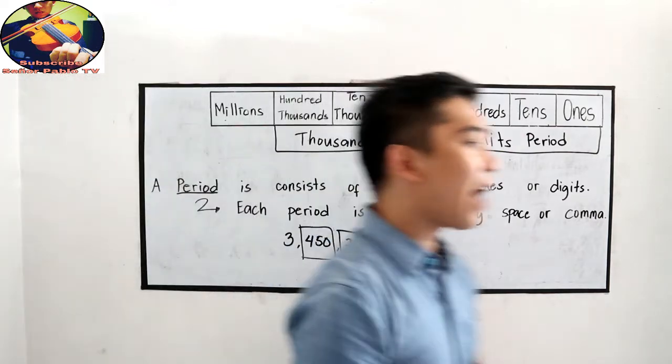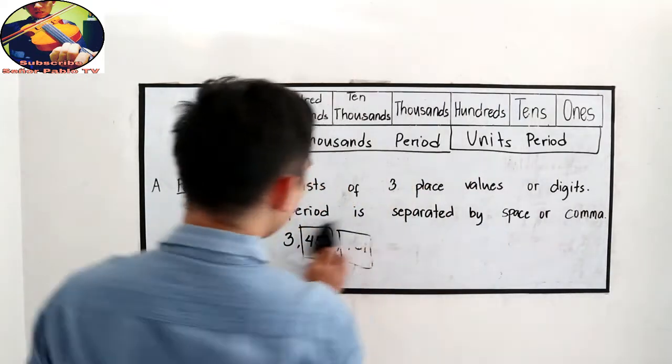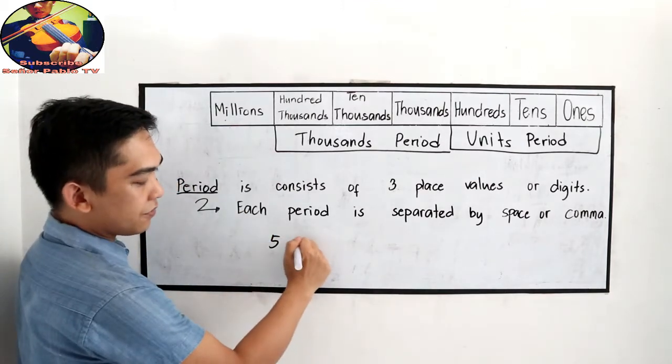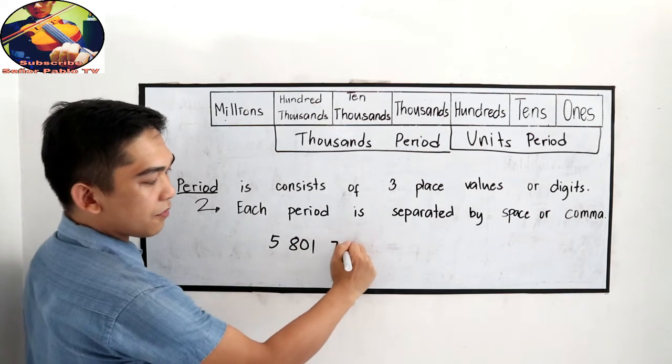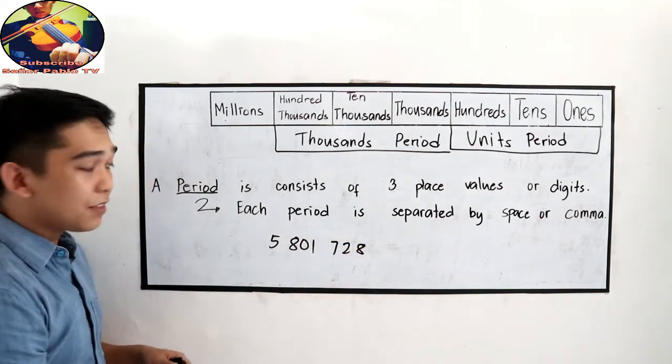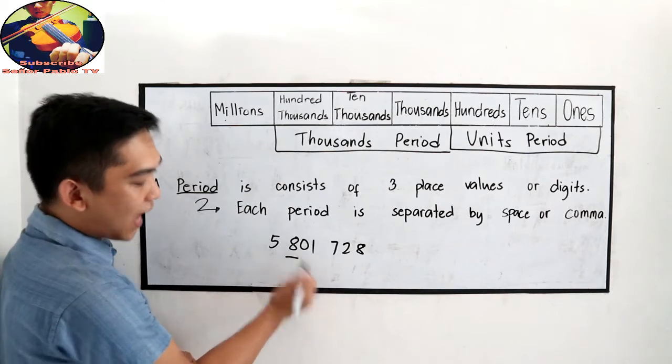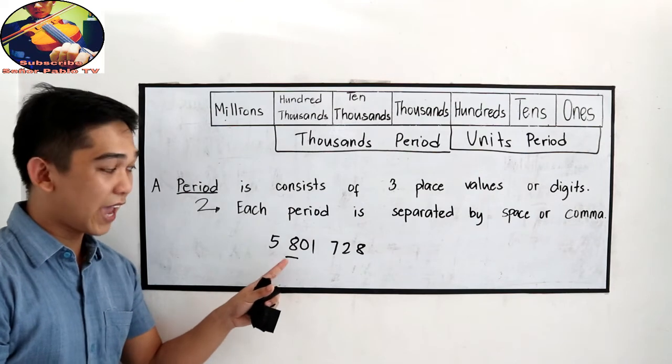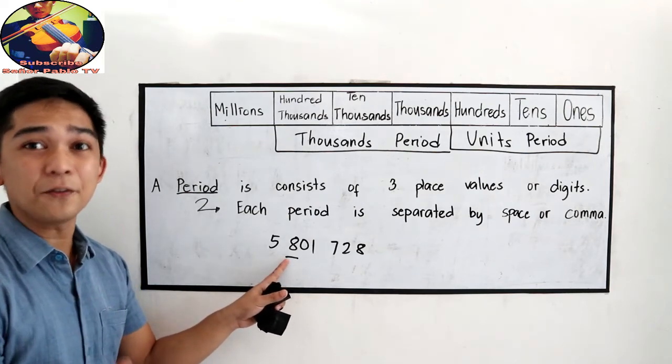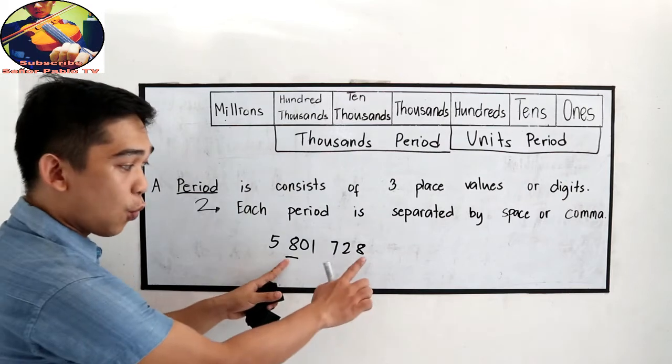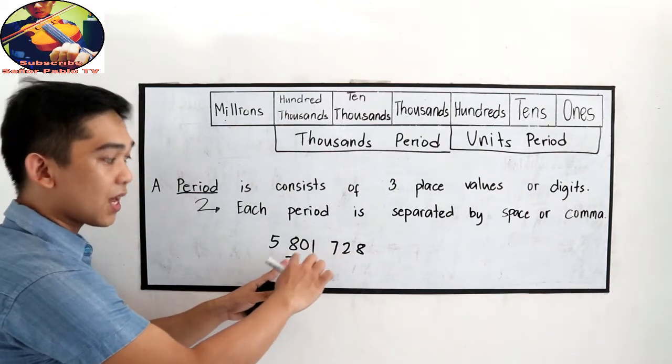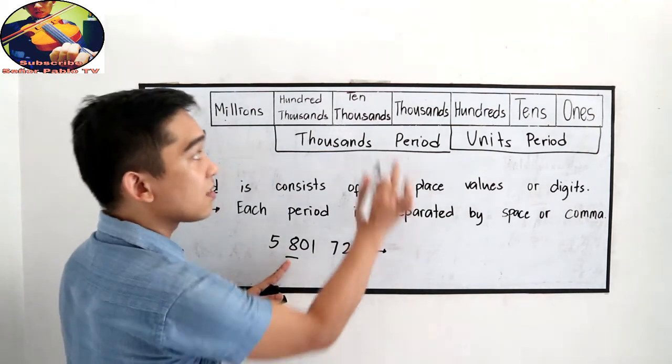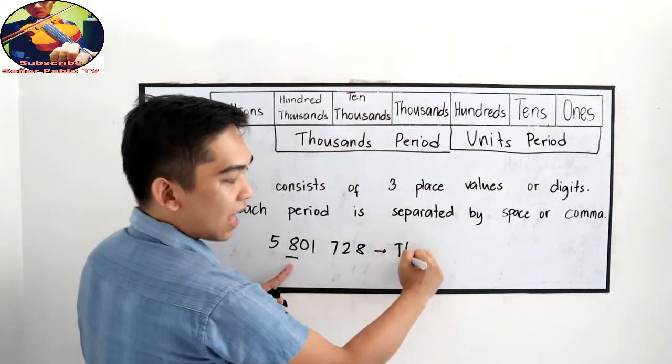So let's try some exercises or some examples. Let's say I have here 5,801,728. Find the period of the underlined number. The underlined number is 8. So let us find first the place value. Ones, tens, hundreds, thousands, ten thousands, hundred thousands. So the period of the underlined number is 100,000 is in thousands.